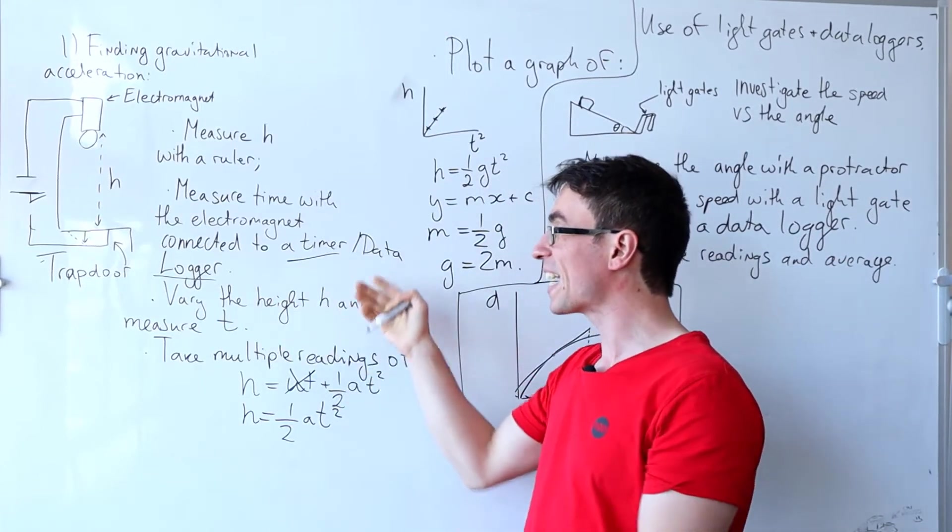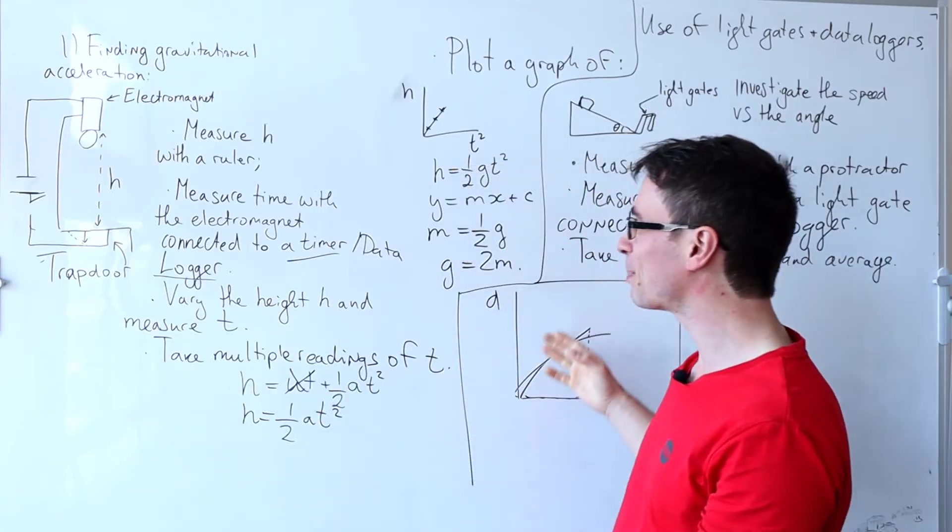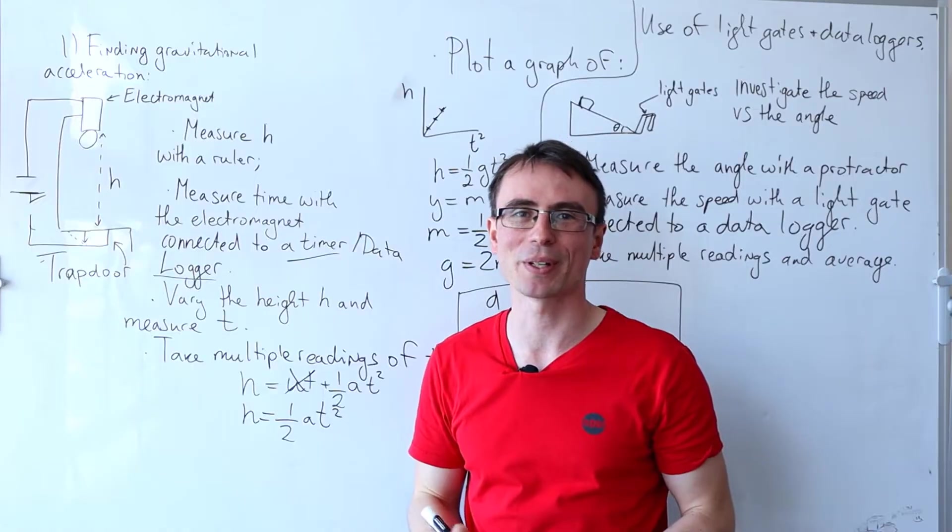We're going to vary the height H and measure the time T. As always we're going to take multiple readings of T and then we're going to average them.